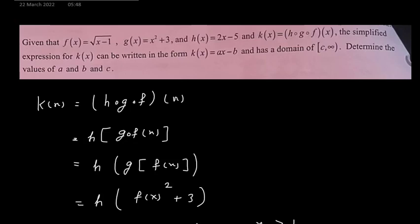The simplified expression for k(x) can be written in the form k(x) equals ax minus b, and the domain can be written as c to infinity. Determine values of a, b, and c.